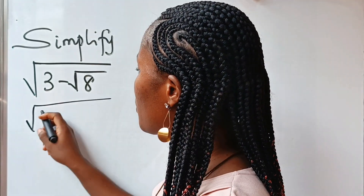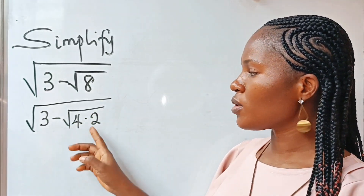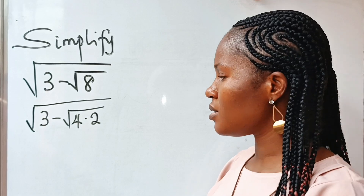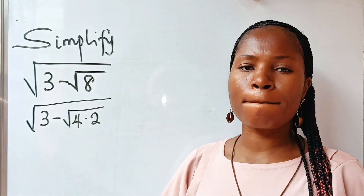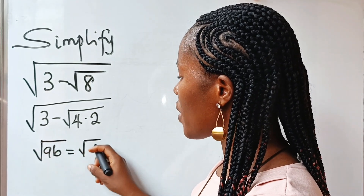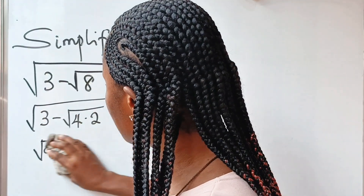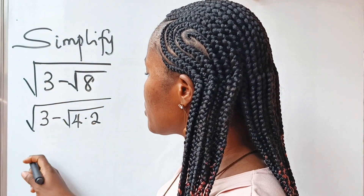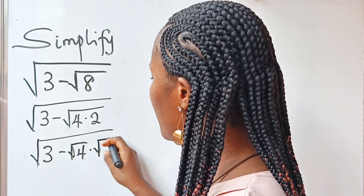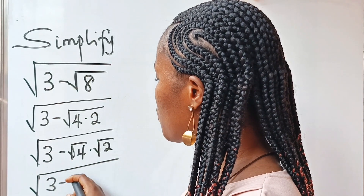So we have square root of three minus — now root eight can be written as square root of four multiplied by two, because we need a perfect square and an ordinary number so that we can take the square root of the perfect square. Recall that the law of surds states that square root of a multiplied by b equals square root of a multiplied by square root of b. So we can write this as square root of three minus square root of four multiplied by square root of two. Square root of four is two, so we have square root of three minus two root two.